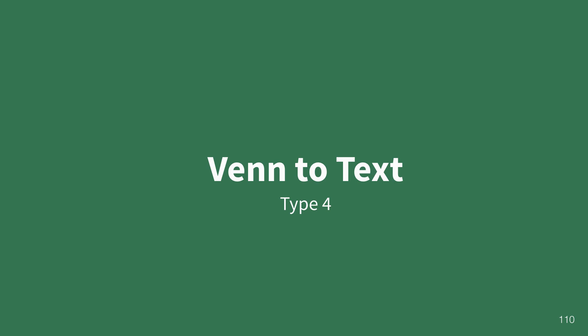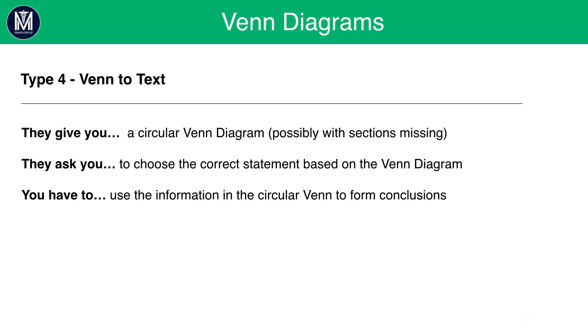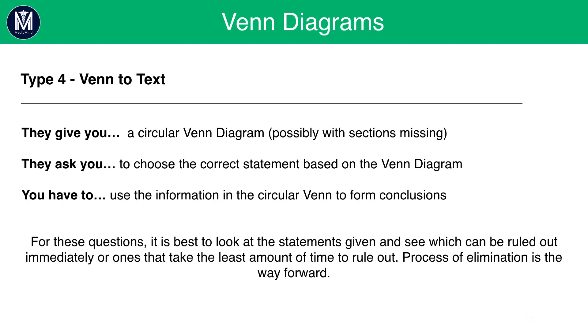Next, let's look at Venn to text questions. Here, they will give you a circular Venn diagram, possibly with sections missing. They are going to ask you to choose a correct statement based on the Venn diagram. You will have to use the information in the circular Venn diagram to form conclusions. For these questions, it's best to look at the statements given and see which can be ruled out immediately or ones that take the least amount of time to rule out. Processing information is the way forward.